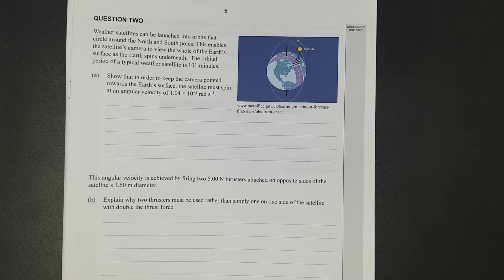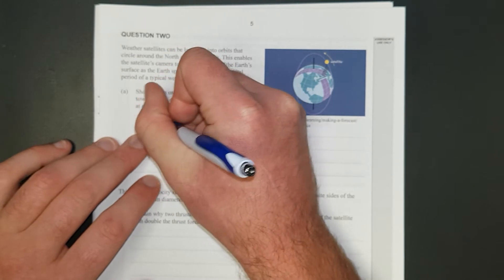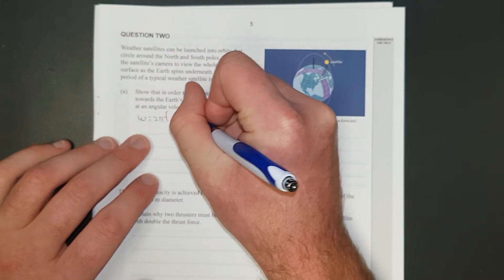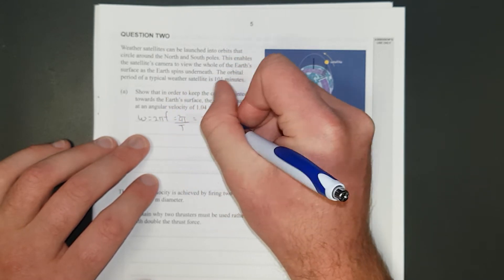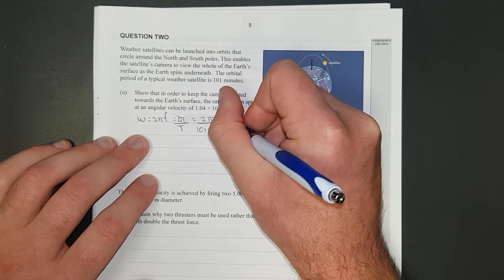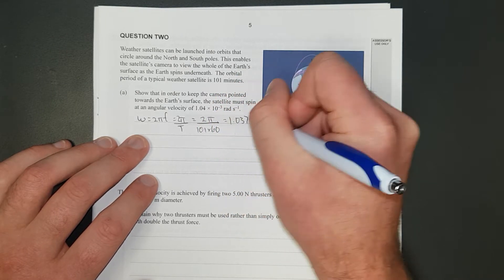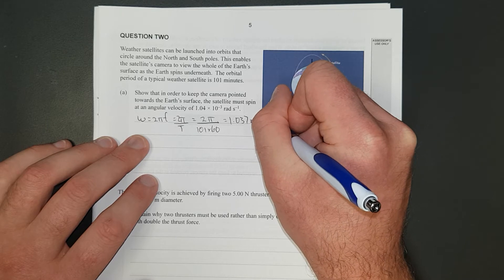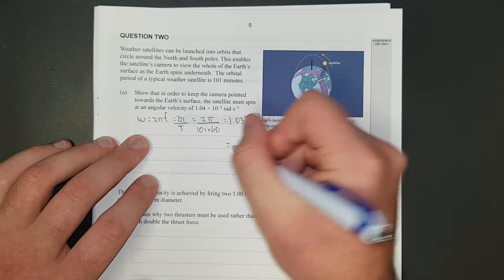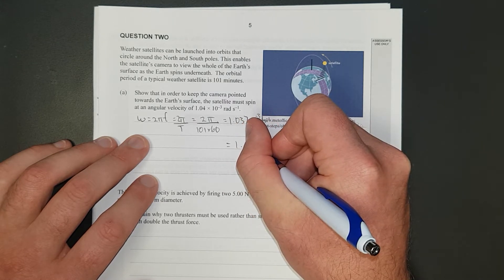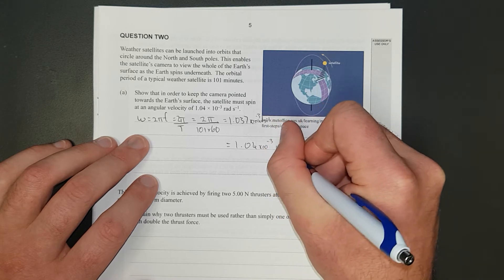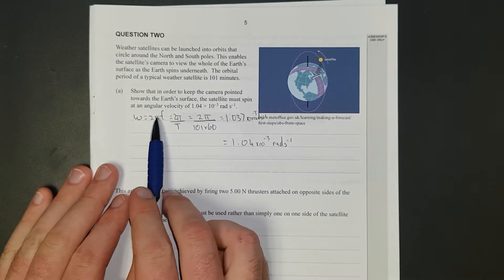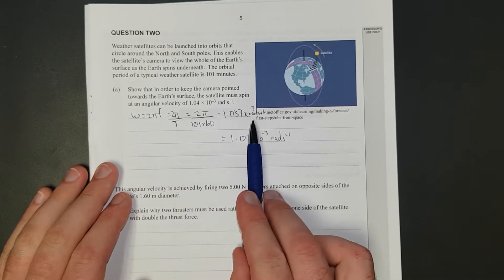To show that in order to keep the camera pointed towards the Earth's surface, the satellite must spin at an angular velocity of 1.04 times 10 to the minus 3 radians per second. In your formula sheet, angular velocity equals 2πf, which is just 2π divided by the period, which in this case is going to be 2π divided by 101 times 60, which just gives you 1.037 times 10 to the power of negative 3 radians per second.